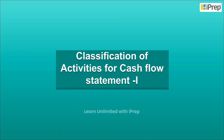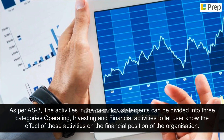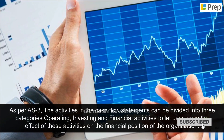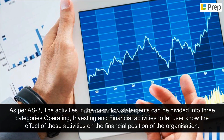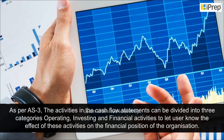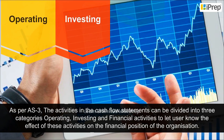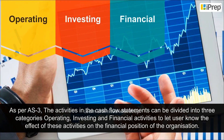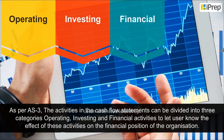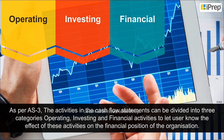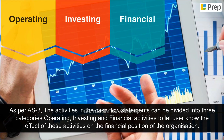Classification of Activities for Cash Flow Statement. As per AS3, the activities in the cash flow statement can be divided into three categories — operating, investing, and financial activities — to let the user know the effect of these activities on the financial position of the organization.